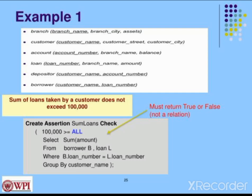The result is grouped by customer name. So we select the sum of amount per customer. That gives us the total loan per customer. We compare that total loan amount, checking it is not greater than 1,000,000 for any customer.